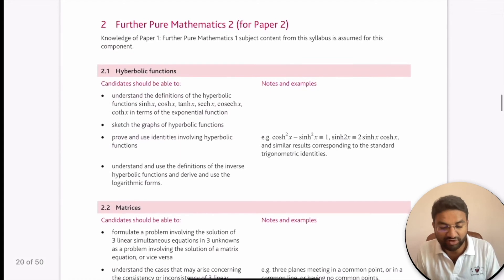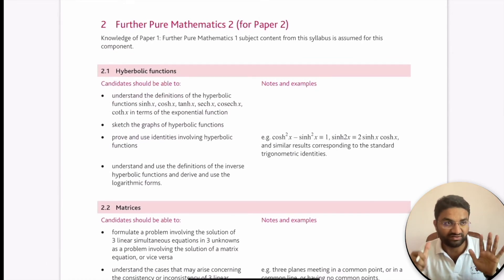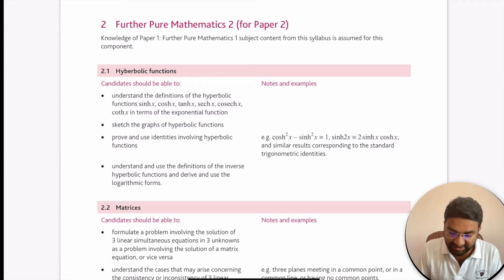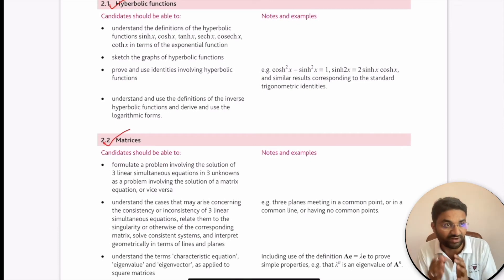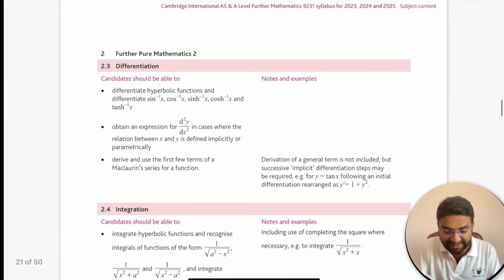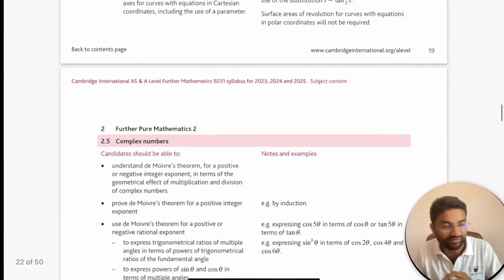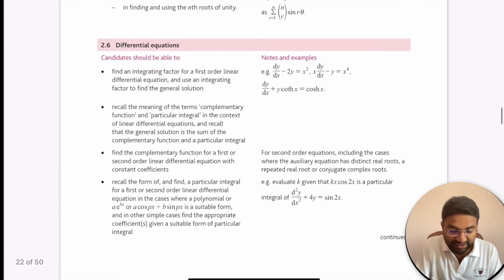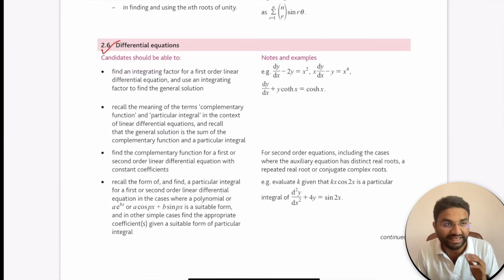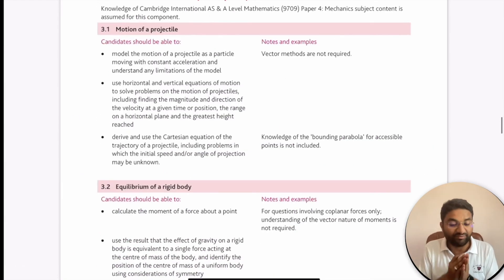For Further Pure Mathematics 2, the six topics are: hyperbolic functions, further matrices, differentiation and integration (calculus), complex numbers, and differential equations — including first-order and second-order linear equations. Mechanics is also very interesting: projectile motion topics include acceleration, velocity, displacement, trajectory equations, initial speed, and angle of projection.